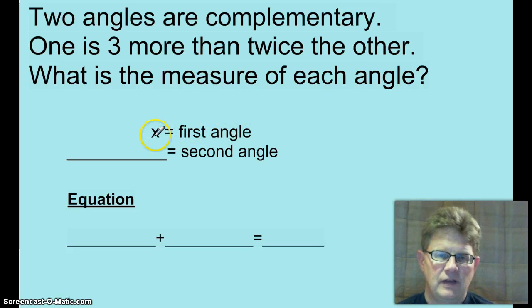Okay, first angle is x. What's the second angle? Well, it's 3 more than twice the other. How do you write that? 3 more than twice the other, right there.